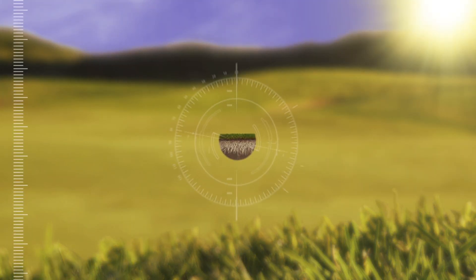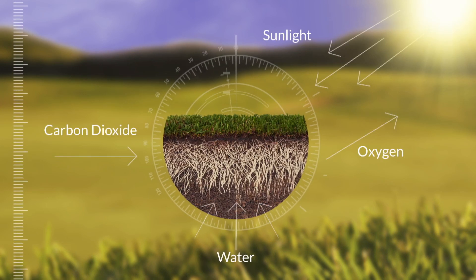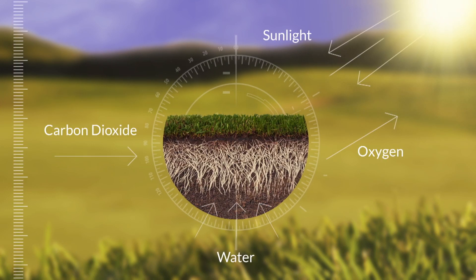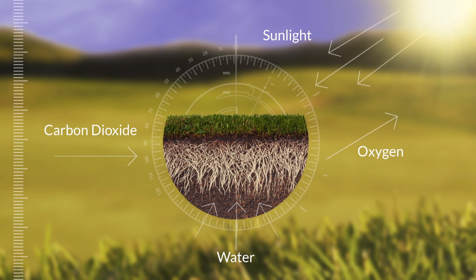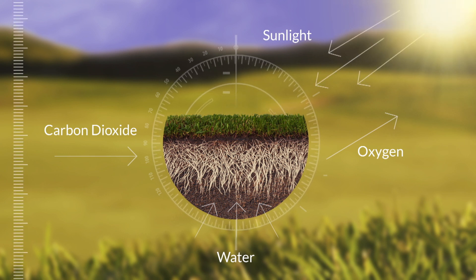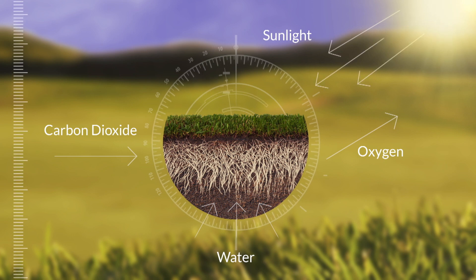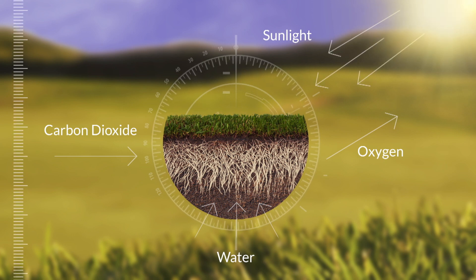TurfScreen enables gases and water to continue moving in and out of the plant, maintaining natural photosynthesis and keeping plants cool. So grass plants function more efficiently in high temperatures when normally they would shut down and wilt.